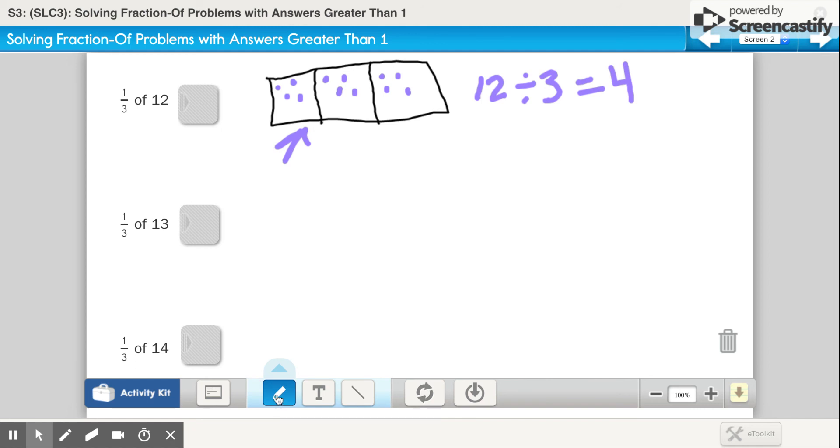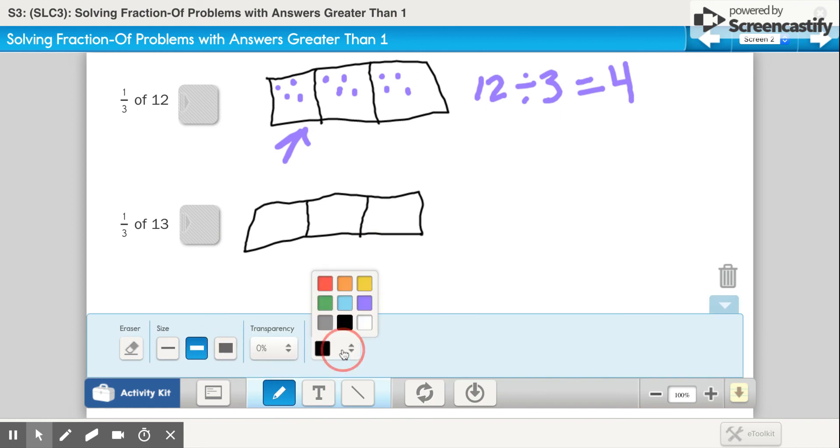If we look at our second one, it is 1 third of 13. So again, I am going to draw my rectangle, and I am going to break it into thirds because it asks for 1 third. But this time, my whole number is 13. So again, if I draw out my counters, I have 1, 2, 3, 4, 5, 6, 7, 8, 9, 10, 11, 12, and then I need to get to 13.